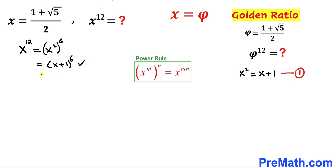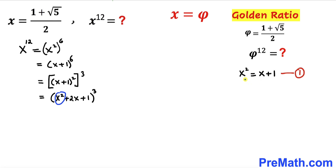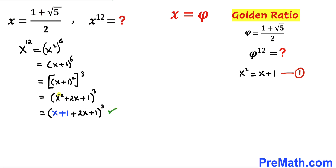Let's rewrite (x plus 1)^6 as ((x plus 1)²)^3 using the power rule. Applying the identity (a plus b)² = a² plus 2ab plus b², this becomes (x² plus 2x plus 1)^3. Focusing on x² and replacing it with x plus 1 from Equation 1, and combining like terms, this simplifies to (3x plus 2)^3.